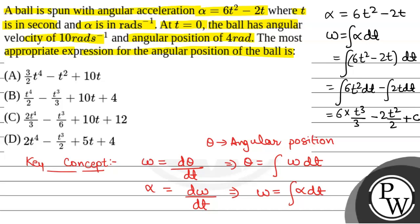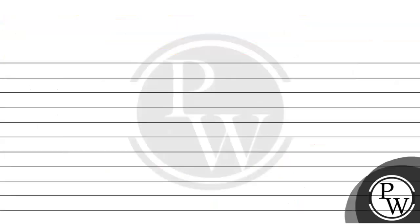Simplifying: 6 times t cubed by 3 gives 2t cubed, and the 2 cancels in the second term to give t squared. So the angular velocity omega equals 2t cubed minus t squared plus C.